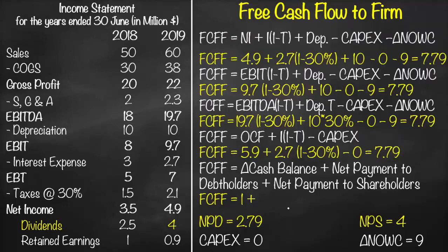Substituting into the fifth formula: FCFF = Change in Cash Balance (1) + Net Payment to Debt Holders (2.79) + Net Payment to Shareholders (4) = 7.79. As shown, all five different formulas for free cash flow to firm give exactly the same result of 7.79.